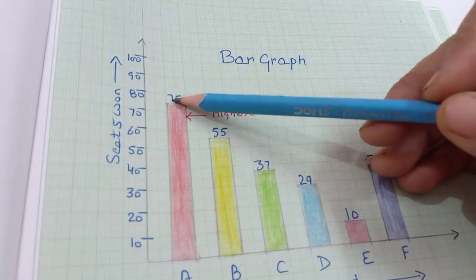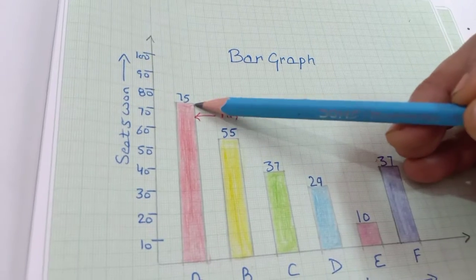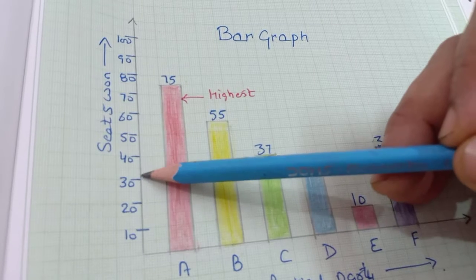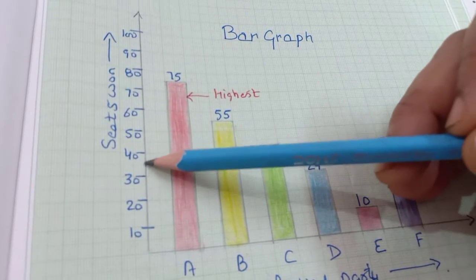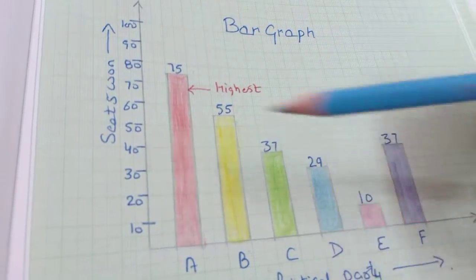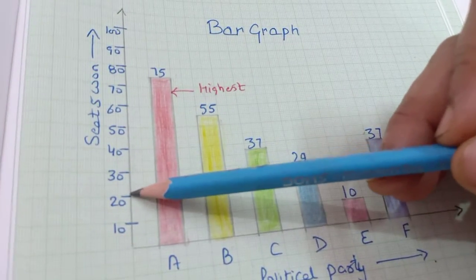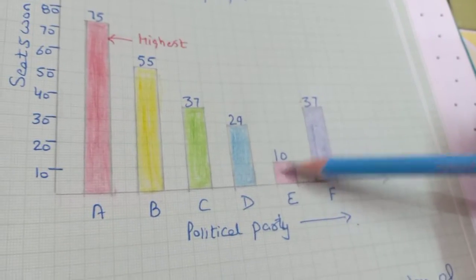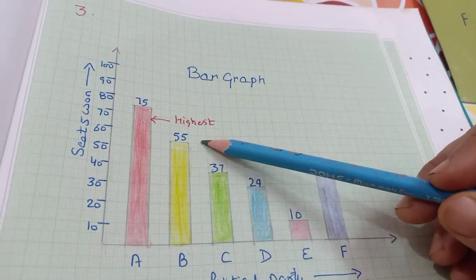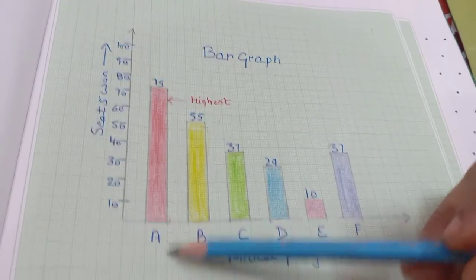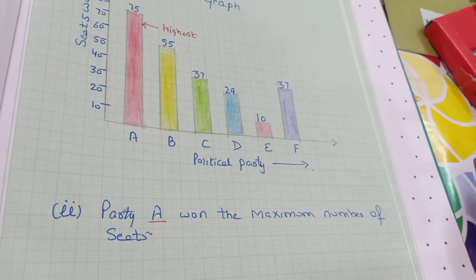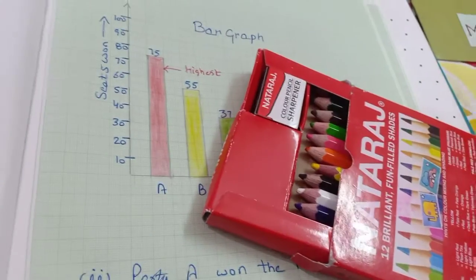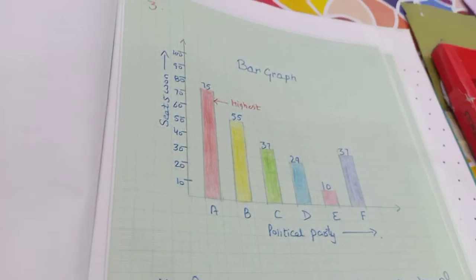अब 75 बनाना आसान था — 70 और 80 के बिल्कुल मिड में ले लिया। 55 भी आसान है। जब 37 बनाएंगे तो हर एक centimeter के अंदर 10 बारीक lines होती हैं तो 7 lines count कर लेंगे। इसी तरह 29 बनाएंगे — 20 complete आएंगे, next 9 ले लेंगे। Maximum height किसकी आ रही है — party A की। तो हमारा answer होगा: party A won the maximum number of seats. हम different colors use कर सकते हैं graph को सुन्दर दिखाने के लिए।